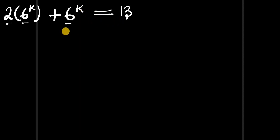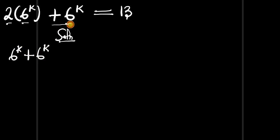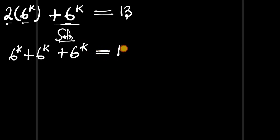Let's start with the solution. Now 2 times 6 to the power of k simply means we're going to have 6^k in two places — that is, plus another 6^k — and remember that there is also a 6^k here, giving us plus 6^k, and this equals 13.